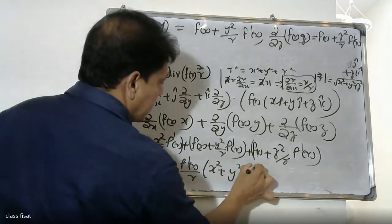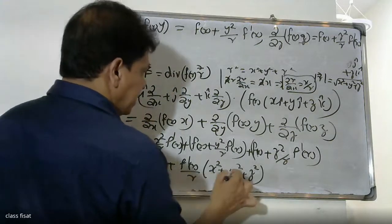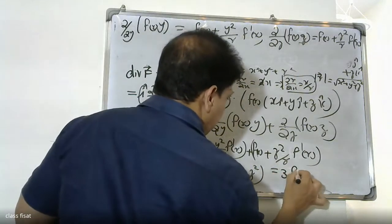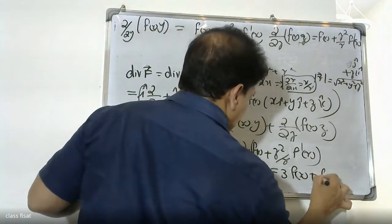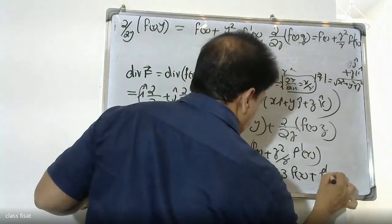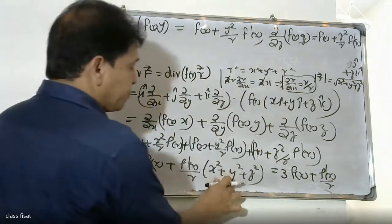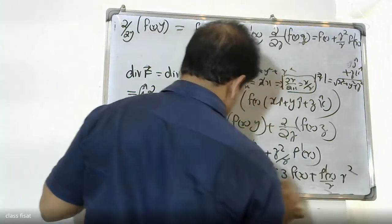This is equal to 3f(r) plus f dash r by r times (x squared plus y squared plus z squared), which equals 3f(r) plus f dash r by r times r squared, giving us 3f(r) plus r times f dash r. Hence proved.